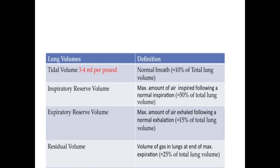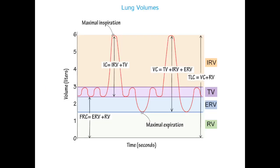Then we have residual volume — the volume of gas remaining in the lungs at the end of maximum expiration. Even after maximum inspiration followed by maximum expiration through the expiratory reserve volume, some gas is still retained in the lungs and never expelled. This is the residual volume, accounting for 25 percent of total lung volume, approximately 1200 ml, and it is always present inside the lungs.